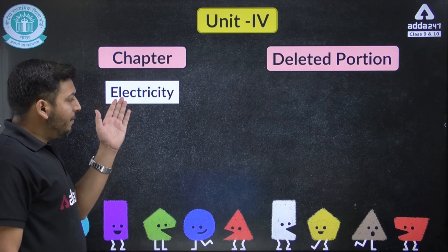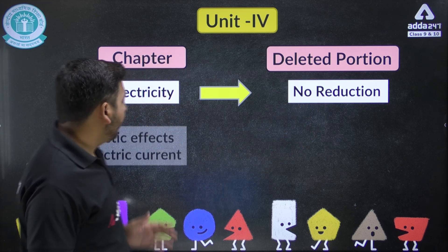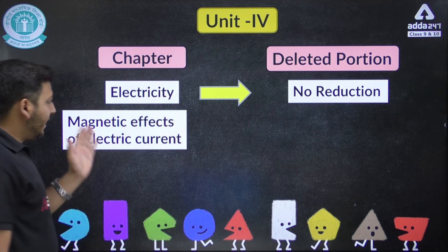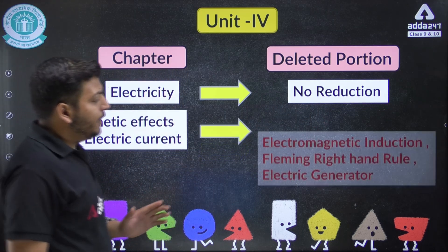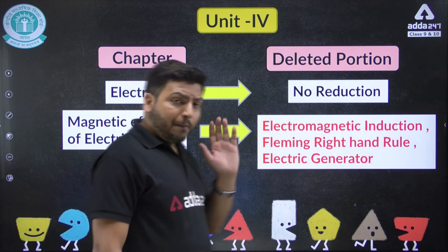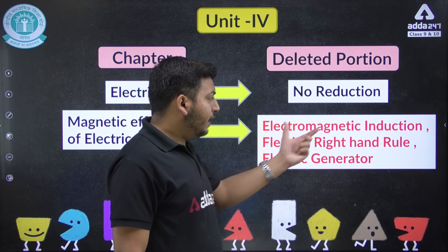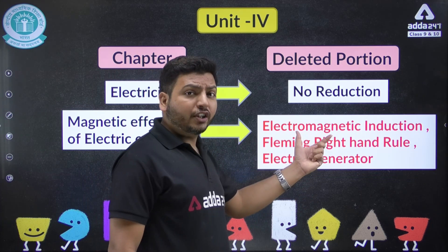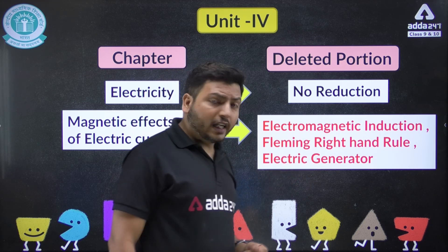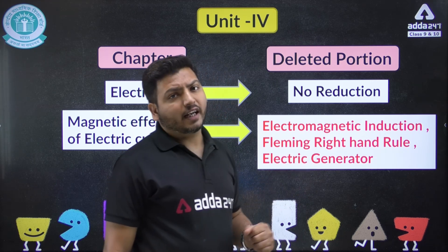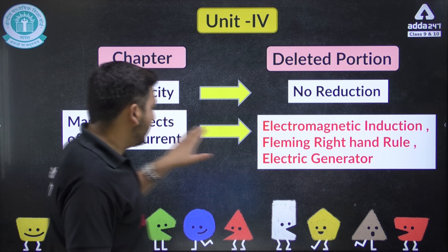In Unit 4, Electricity — you have to read it fully; everything will be asked. For Magnetic Effects of Electric Current, there are some deletions: electromagnetic induction, Fleming's right-hand rule, and electric generator will not come. These three topics you do not need to read in that chapter.